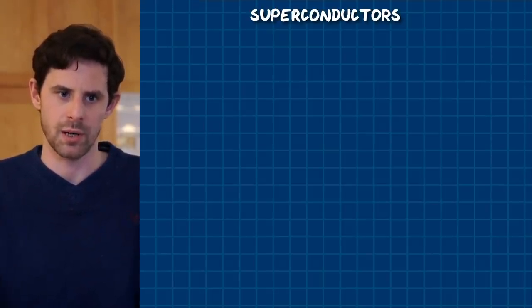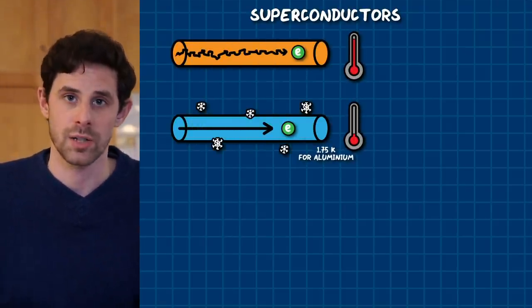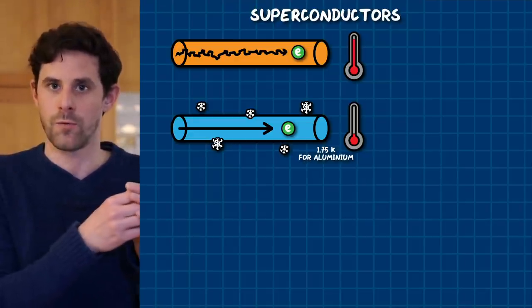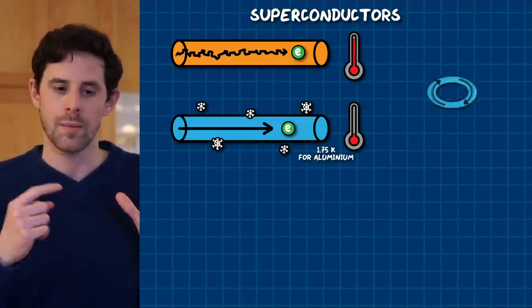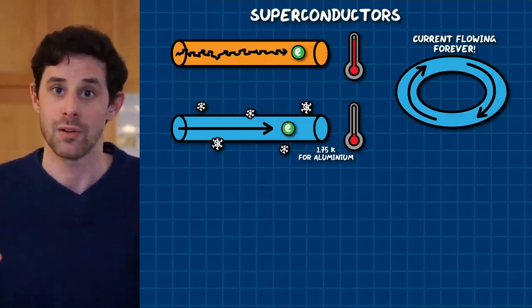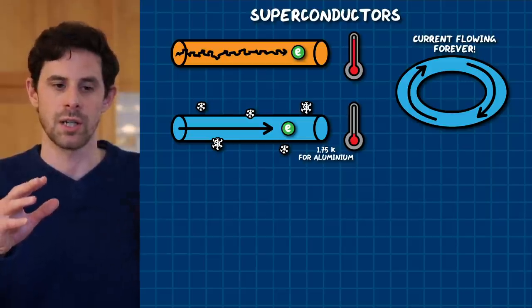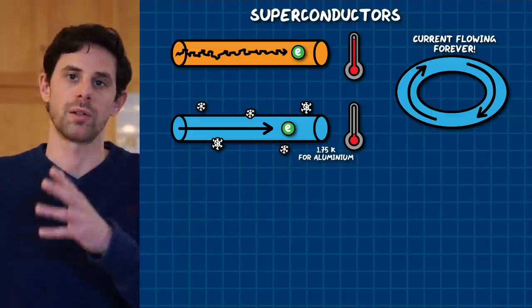Superconductivity is a bizarre feature of certain materials. For example, if you take a wire of aluminium and cool it down to a very low temperature — just 1.75 Kelvin — it will start to superconduct, which means that electrical current can flow through it with zero resistance, literally zero resistance. You could set up a circulating current in a wire of aluminium that would keep looping literally forever as long as you keep it cold. We already use this technology for superconducting magnets in MRI scanners or in particle accelerators.